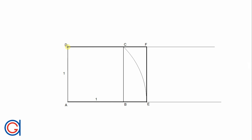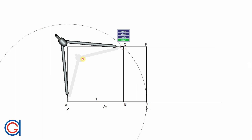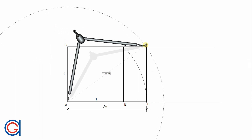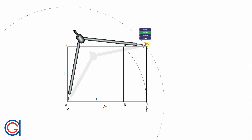And here we have our root 2 rectangle marked in a thicker line. If you divide the long side by the short side, you will get the square root of 2.